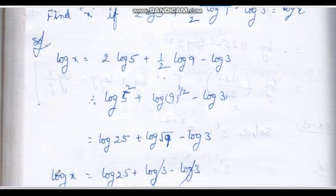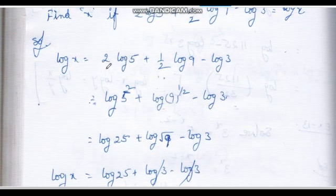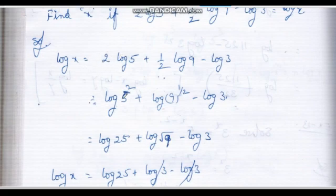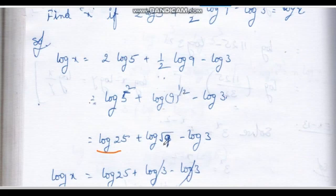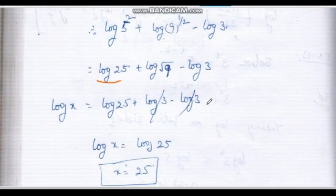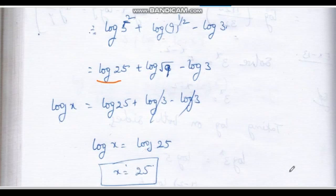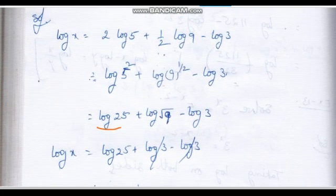2 log 5 equals log 25. Half log 9 equals log 9 to the power (1/2) equals log root 9 equals log 3. So log 25 plus log 3 minus log 3 — the log 3 terms cancel — giving log x equals log 25, therefore x equals 25.